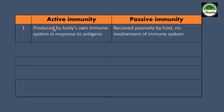Active immunity is produced by the body's own immune system in response to the antigen. Passive immunity is received passively by the host body, with no involvement of the immune system.